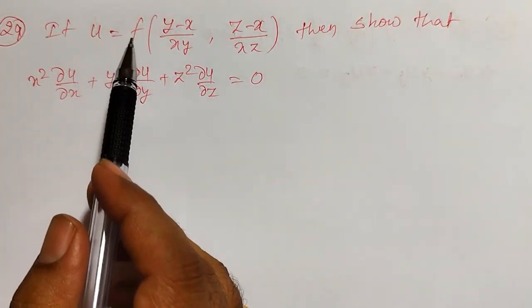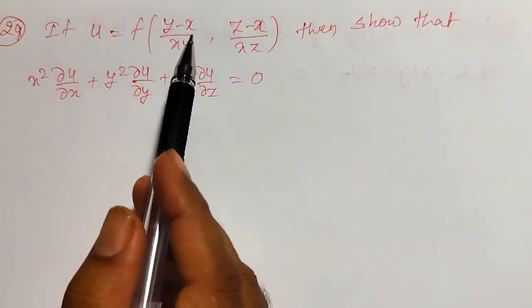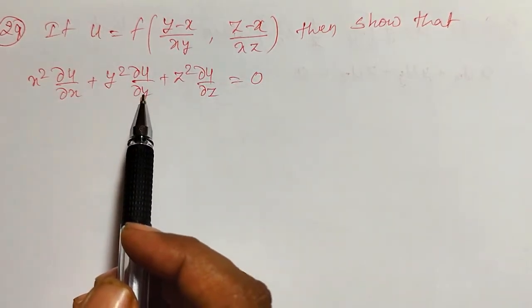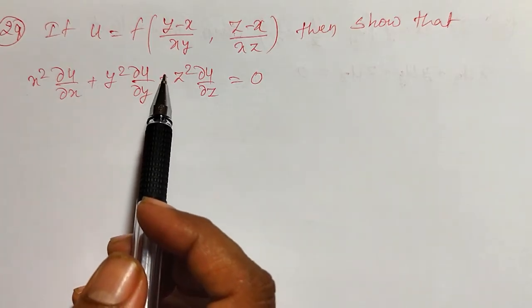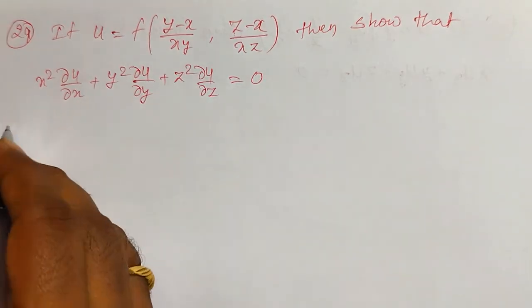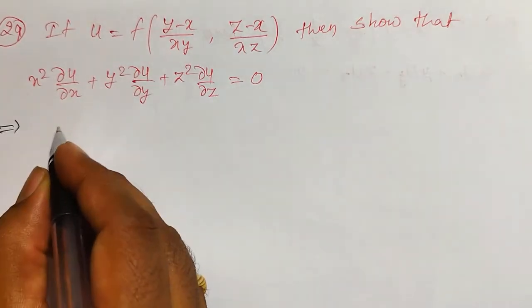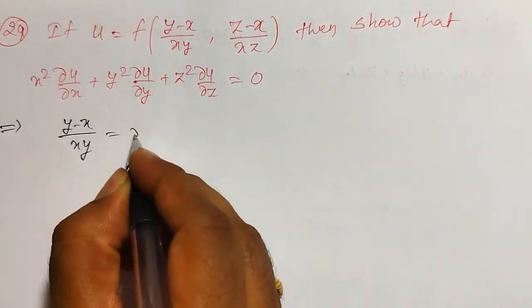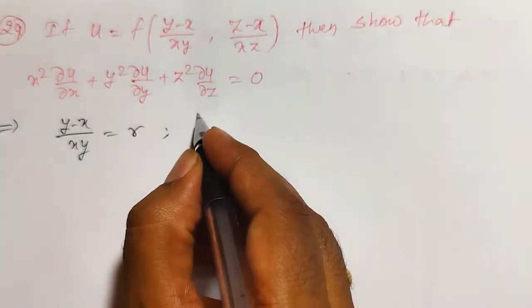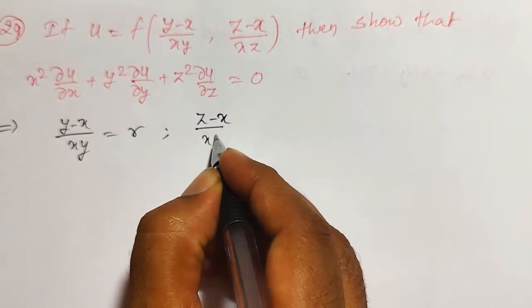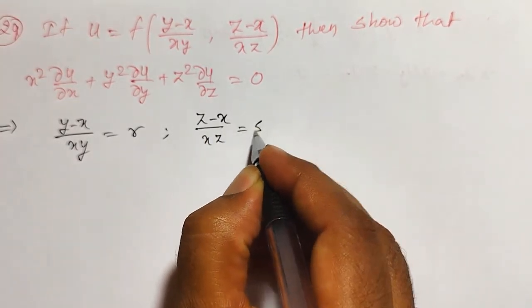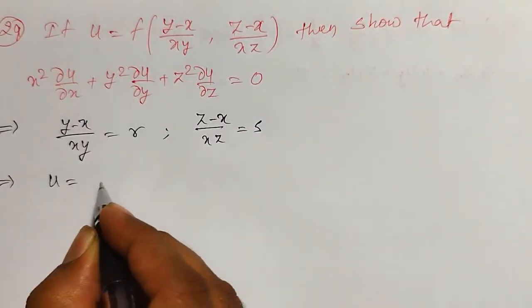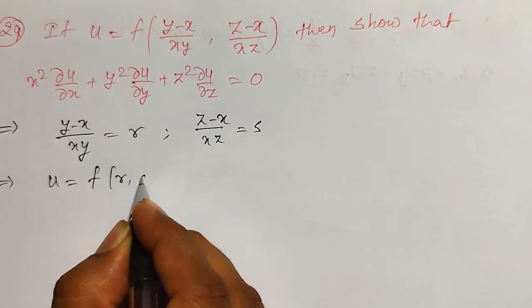Here, u is a function of x, y, z and those x, y, z together are the functions of themselves. I want to solve this by converting into composite functions. To convert into composite functions, let me consider y minus x divided by xy as r, and z minus x divided by xz as s. Then the function u I can write as u equal to f of r comma s.